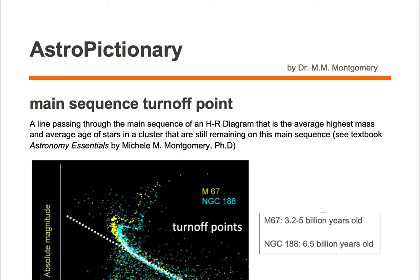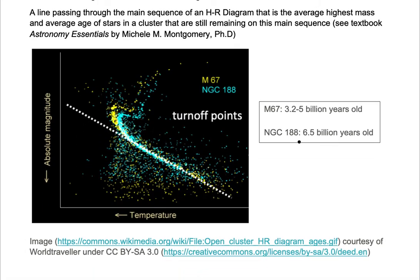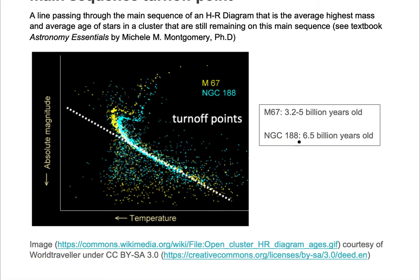The main sequence turnoff point is a line passing through the main sequence of an HR diagram that represents the average highest mass and average age of stars in a cluster that are still remaining on the main sequence. Let's take a look at some main sequence turnoff points on an HR diagram.